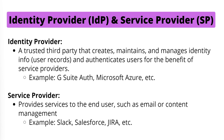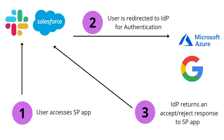Instead of just presenting definitions, I've created a diagram to help better demonstrate the single sign-on process. As an end user, I want to log into a service provider such as Slack or Salesforce. As a user, I access the service provider app or website, and once on the login screen, I click or select the single sign-on option.